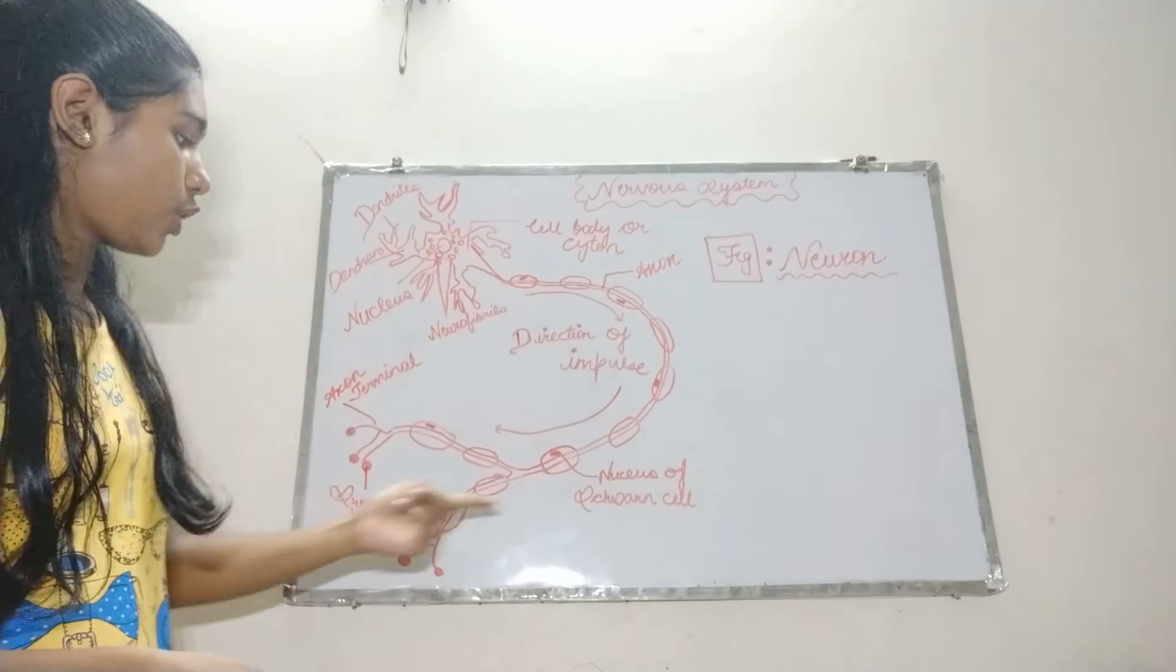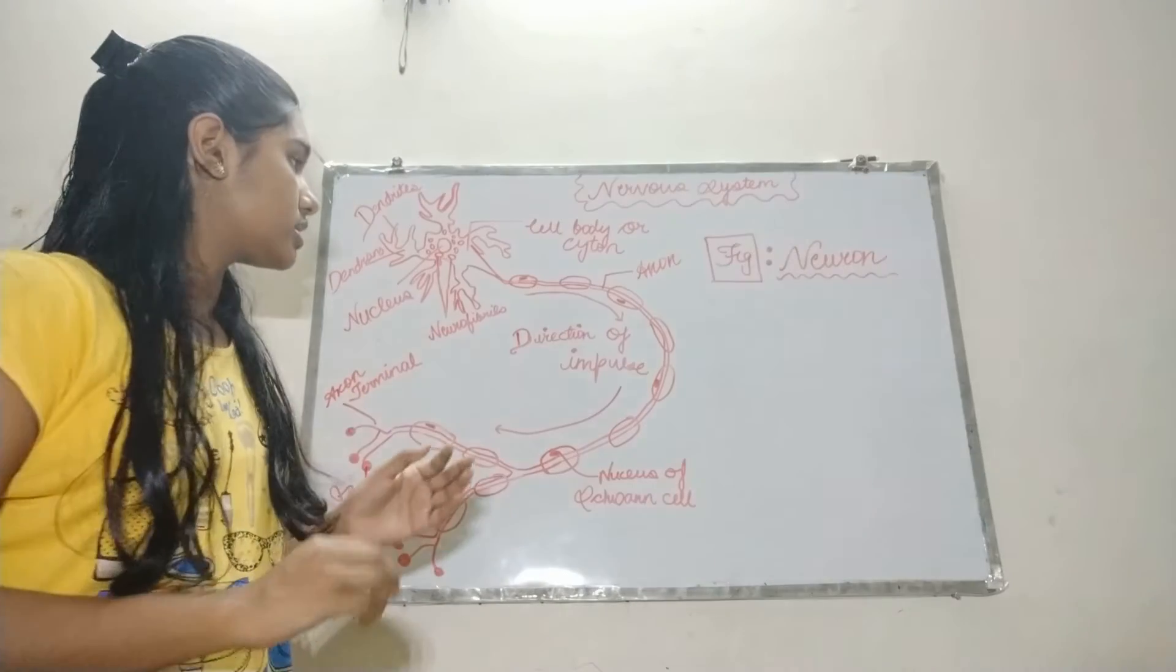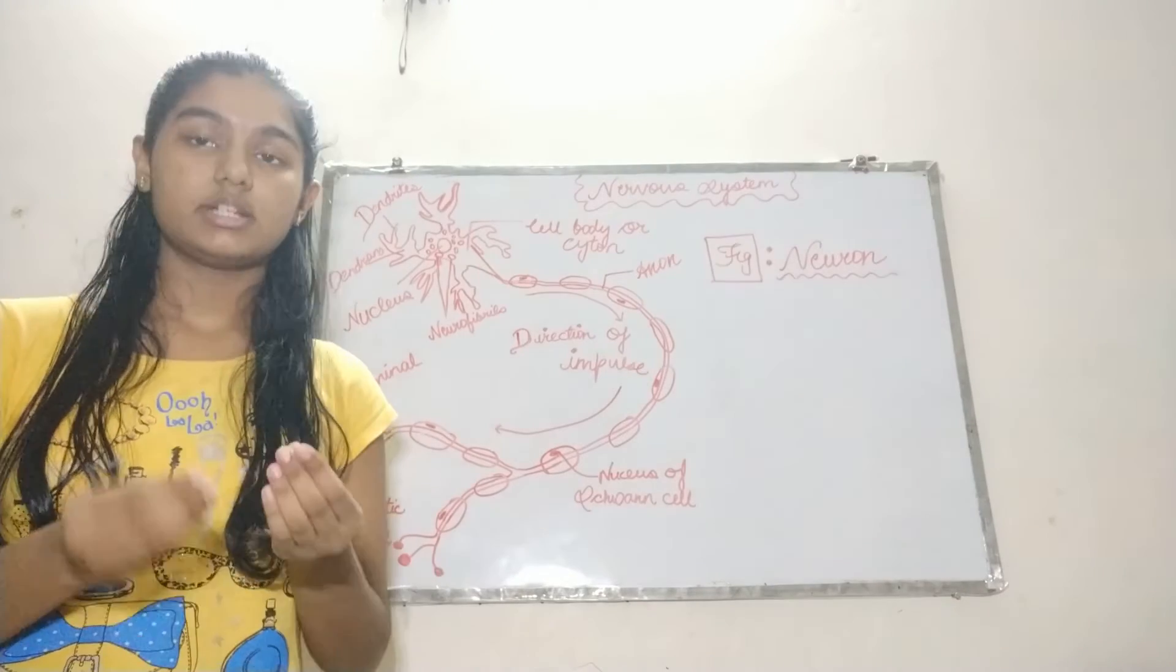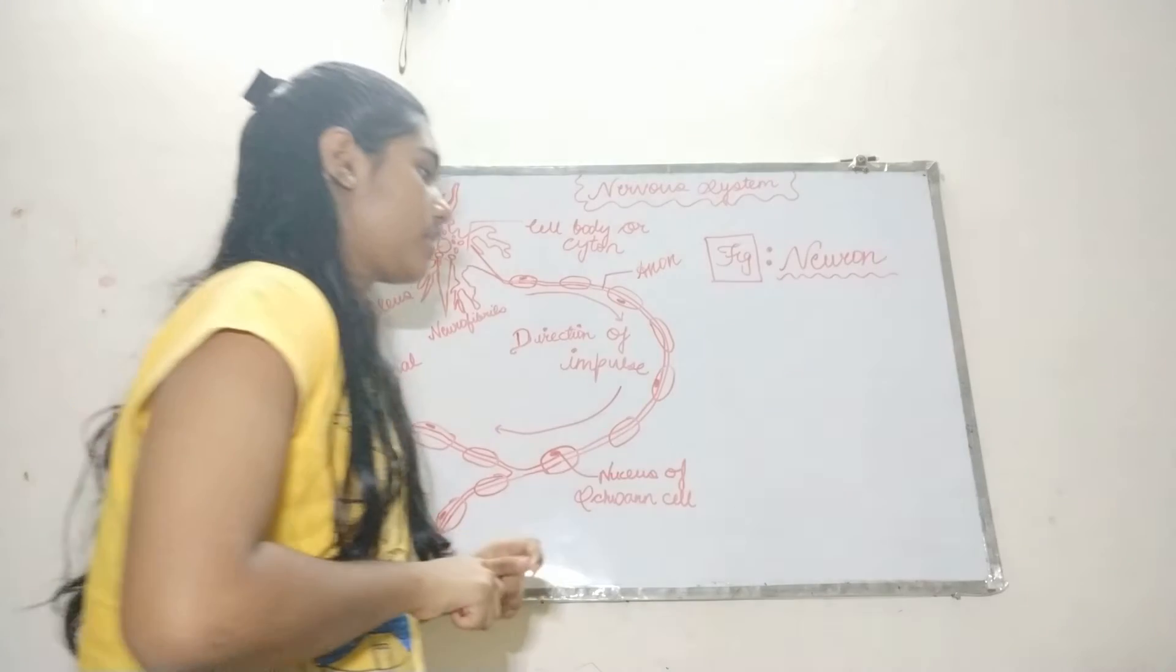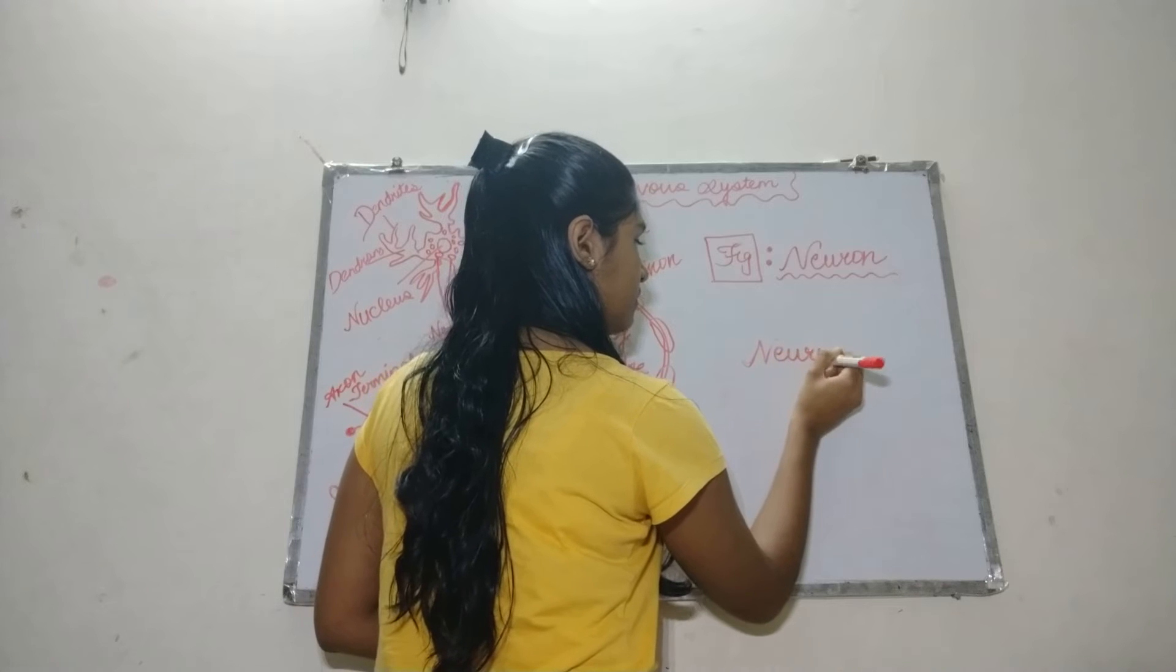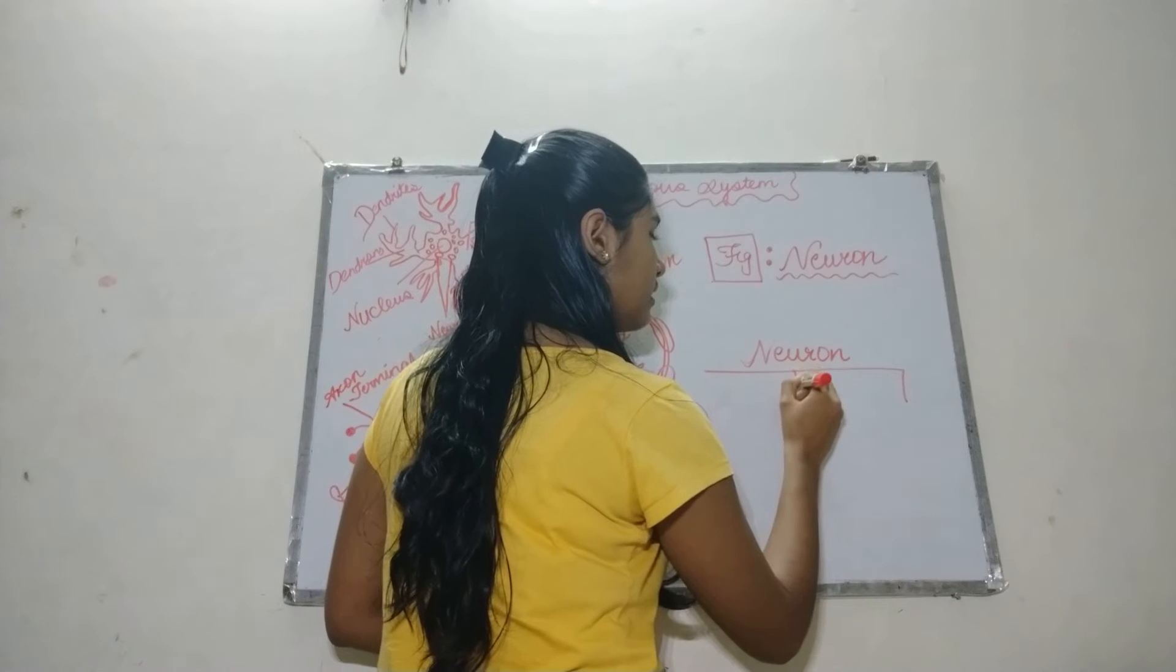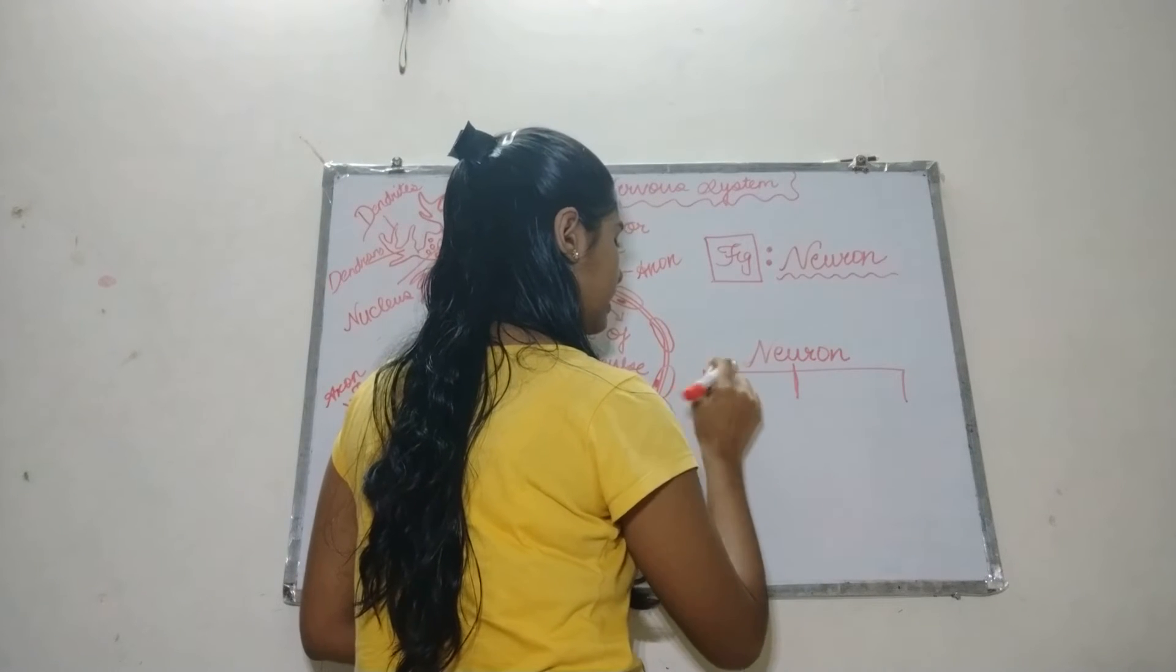It is the basic structural and functional unit of the nervous system. This is the structure of the neuron. Our neurons consist of several parts. Some of these we will discuss here in brief. In neurons, there are three parts.